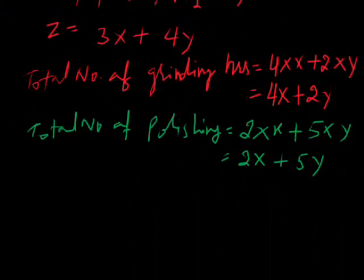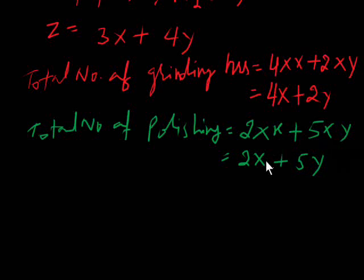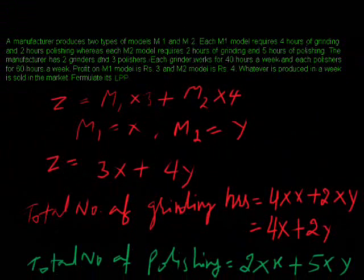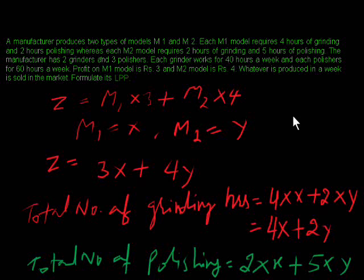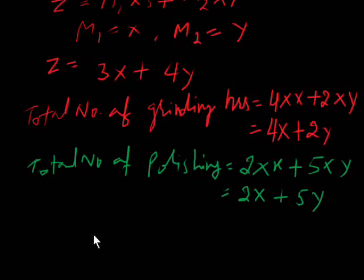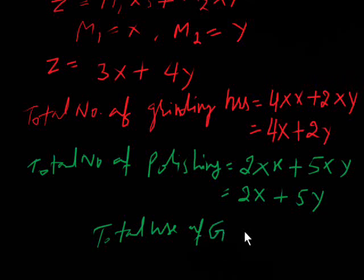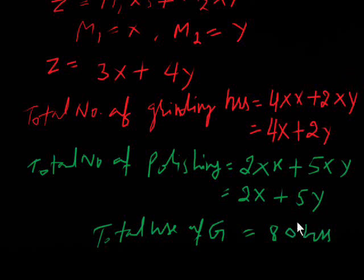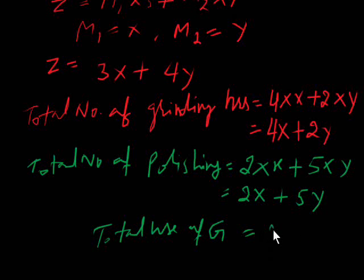Now we calculate how much total machine time we can utilize. For the grinders, there are 2 grinders and each can be used for 40 hours per week. So the total use of the grinder is 2 times 40, which equals 80 hours in a week.